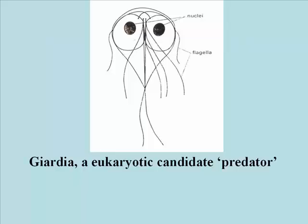But here's one that actually exists today, which lacks all organelles except basically the nucleus. This is Giardia — it's a parasite. And this cell, or one like it, could have swallowed up precursors to mitochondria or chloroplasts sometime way back in evolutionary history.